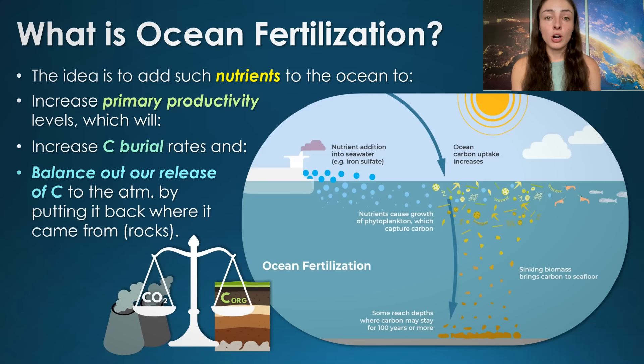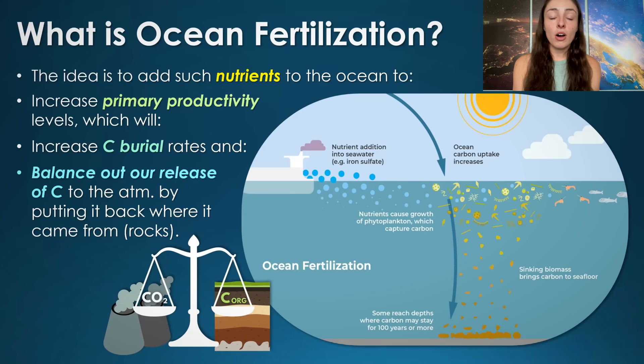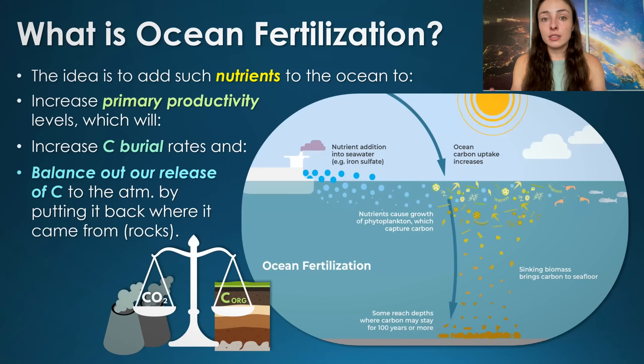This process of carbon sequestration and long-term storage could balance out our release of carbon from the rock record by burning fossil fuels. Essentially, burning fossil fuels is the opposite process to photosynthesis, so if we increase the amount of photosynthesis and subsequent carbon burial, we could help balance out our impact on the carbon cycle.